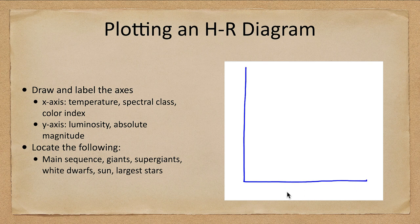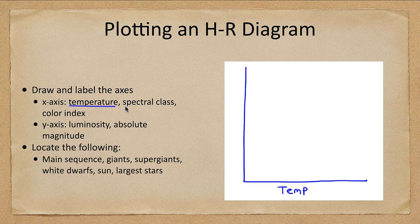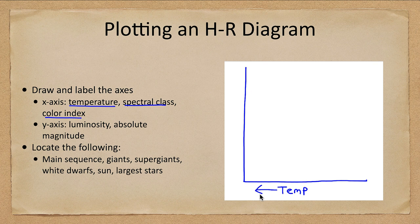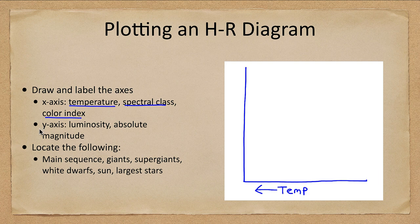On the x-axis we graph something that relates to the temperature. We can use things like temperature itself, spectral class, and the color index which we've talked about in a previous lecture. Temperature increases to the left - that's the opposite of how we often graph things, but for this HR diagram the temperature will be to the left.